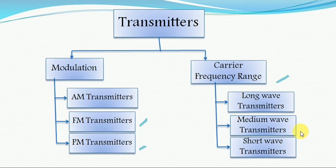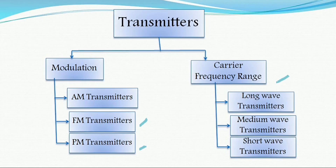Medium wave transmitters use a frequency range of 300 to 3000 kilohertz and are simply used in AM broadcasting. Short wave transmitters operate at 3 to 30 megahertz and are mainly used for long distance AM communication.